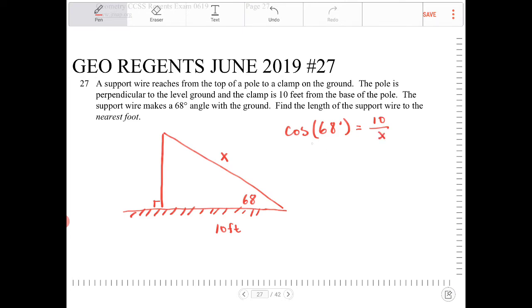We're going to figure out the hypotenuse. So I got to isolate X. I'm going to multiply both sides by X. I get X cosine of 68 is equal to 10. I can now divide both sides by cosine 68. So X is equal to 10 over cosine 68.